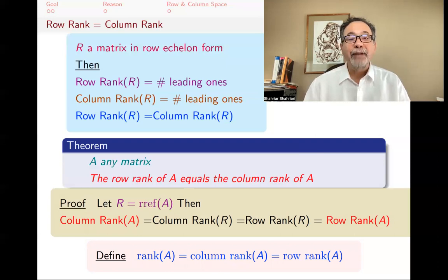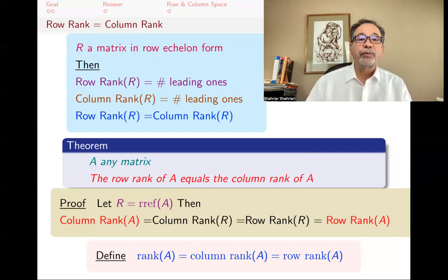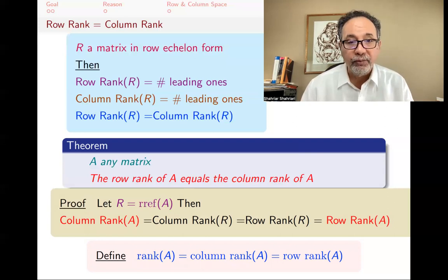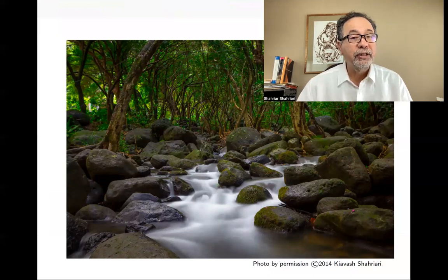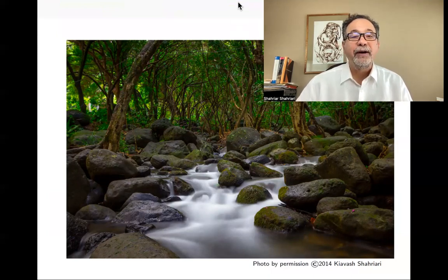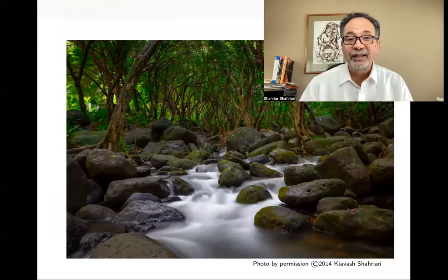The rank of a matrix is its column rank or its row rank — those happen to be the same — and equals the maximum number of linearly independent rows or the maximum number of linearly independent columns. This is the end of this video. If you'd like to see more videos like this on undergraduate mathematics, subscribe to my channel and like this video.